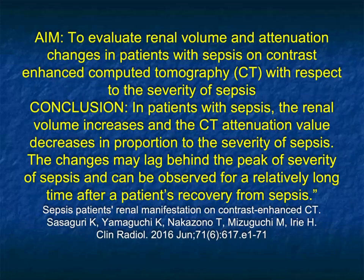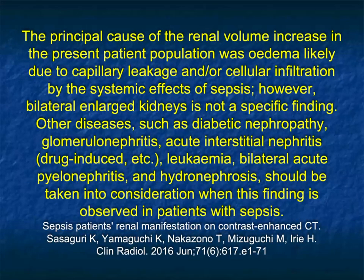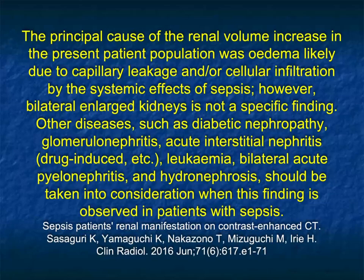There's been a lot written about sepsis. In patients with sepsis, renal volume increases and CT attenuation decreases in proportion to the severity of sepsis. You may see poor renal function, poor cortical medullary interface, and infiltration of the kidneys, particularly if the sepsis is due to renal infection. The principal cause of renal volume increase is edema, likely due to capillary leakage or cellular infiltration from systemic sepsis. Bilateral enlarged kidneys is not specific, so history is very important.